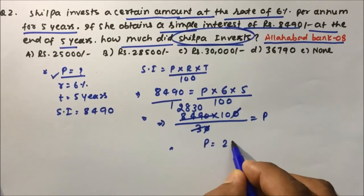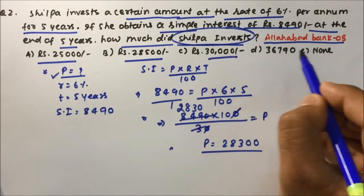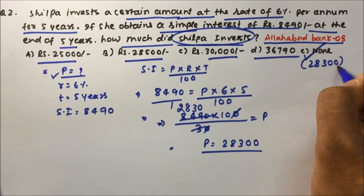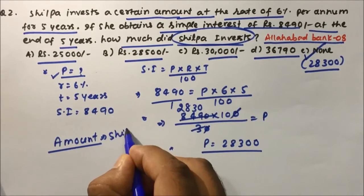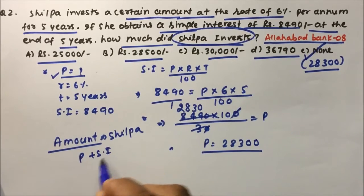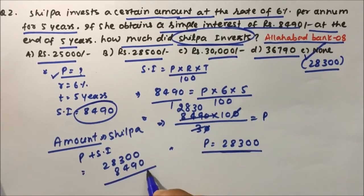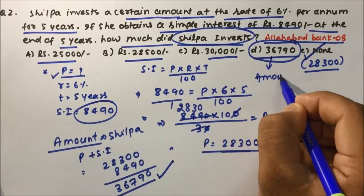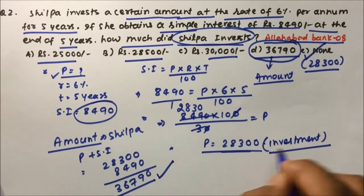The principal is 28,300. Checking the options: 25,000; 28,500; 30,000; 36,790 — so the answer is 'None' and the value is 28,300. Note: if the question asks for the total amount Silpa receives from the bank, that is principal plus simple interest: 28,300 + 8,490 = 36,790. Option 36,790 is the amount, not the principal investment of 28,300.